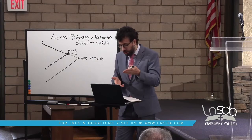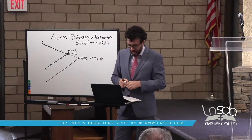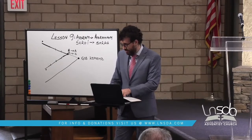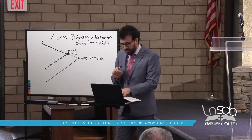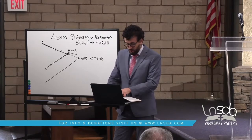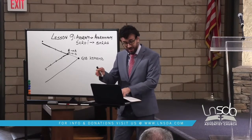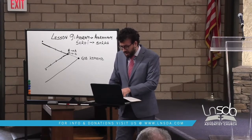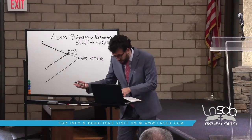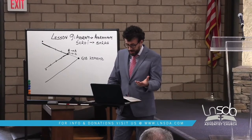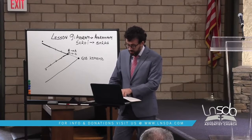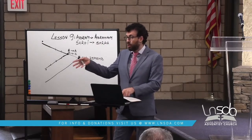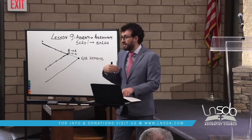Some translations say 'your reward is exceedingly great.' Abram said, 'Lord God, what will you give me, seeing I go childless?' So God comes to him and tells him, 'I'm your shield, I'm your exceedingly great reward.' And Abraham says, 'But what will you give me since I go childless? The heir of my house is Eliezer of Damascus.' Then Abram said, 'You have given me no offspring. Indeed, one born in my house is my heir' — meaning this servant of his was born in his house but was not his biological child.